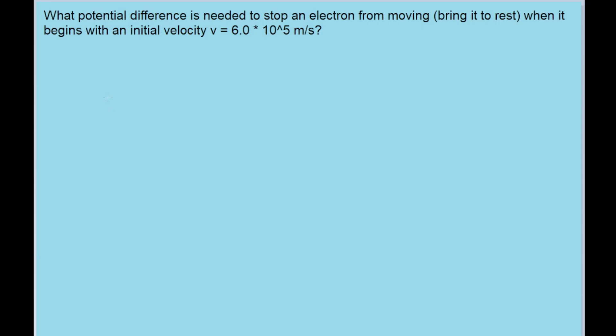For this problem, we can use the law of conservation of energy to find the potential difference needed. The potential energy of a charged particle in an electric field is equal to the charge of the particle times the potential difference. Because of the law of conservation of energy, this is going to be the same as the initial kinetic energy the particle has, also known as one-half times the mass of the particle times the square of its speed.